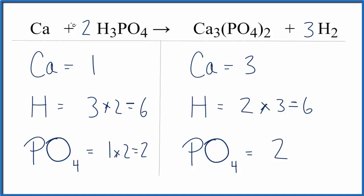And then for the calcium, we need 3 calciums, we put a coefficient of 3 there. 1 times 3 that equals 3, and now this equation is balanced.